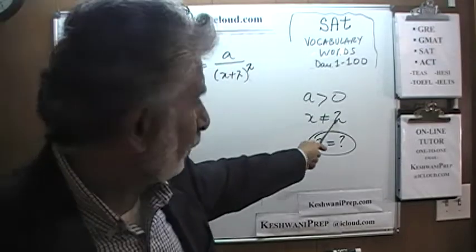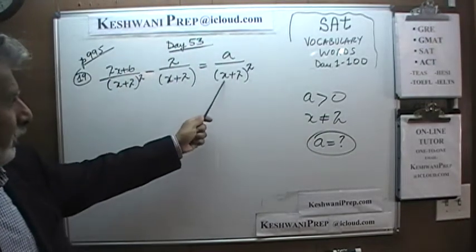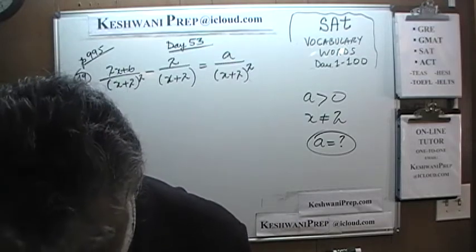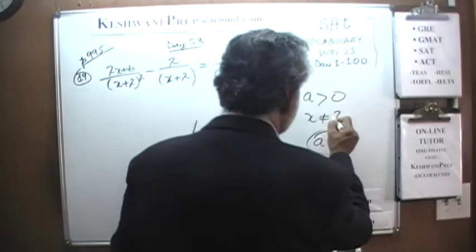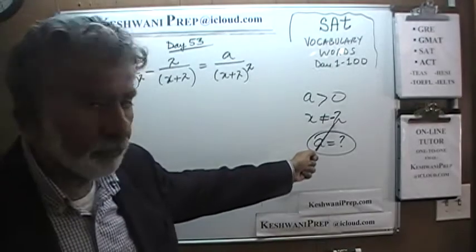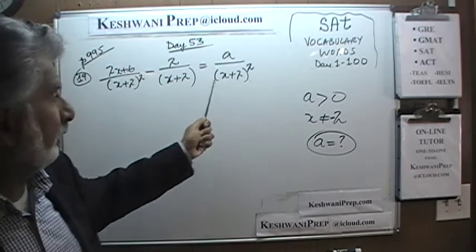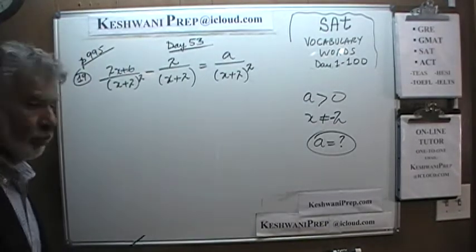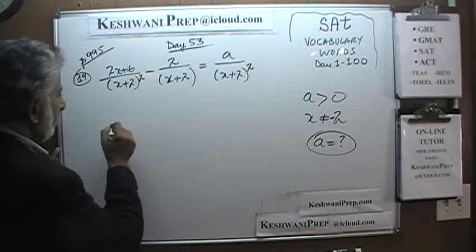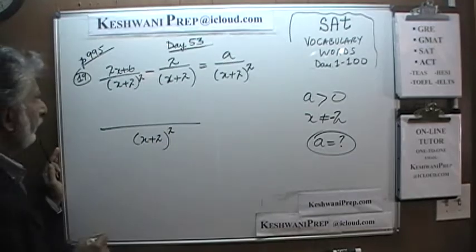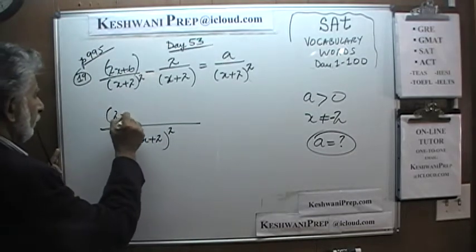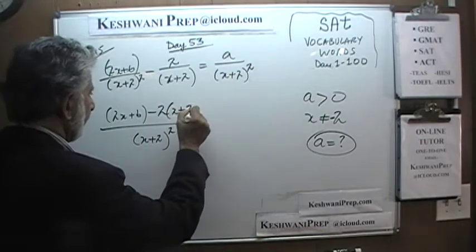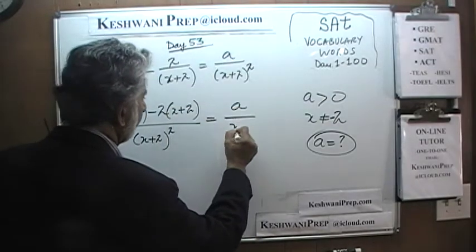The reason they tell us x cannot equal negative 2 is because if x were negative 2, negative 2 plus 2 gives us 0, and this whole expression becomes undefined — because dividing anything by 0 is undefined. That's why that condition is there. Don't worry about it; we just want to solve for a. Let's find the common denominator of (x plus 2) squared. We have 2x plus 6 times (x plus 2) over (x plus 2) squared, and a over (x plus 2) squared.